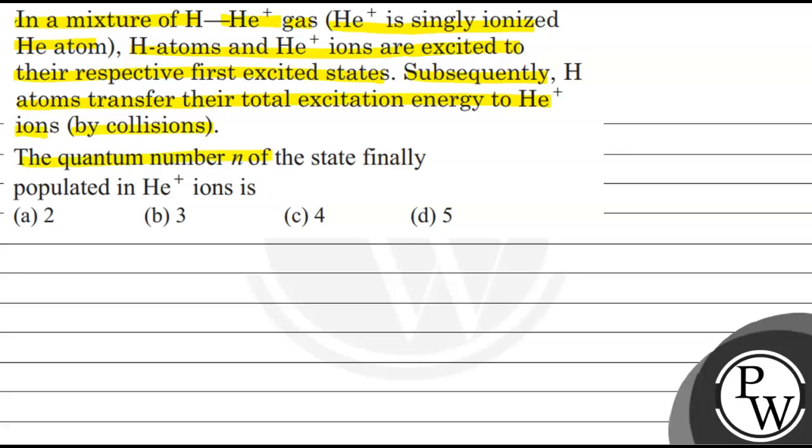The quantum number N of the state finally populated in helium plus ions is option A, 2, option B, 3, option C, 4, option D, 5.